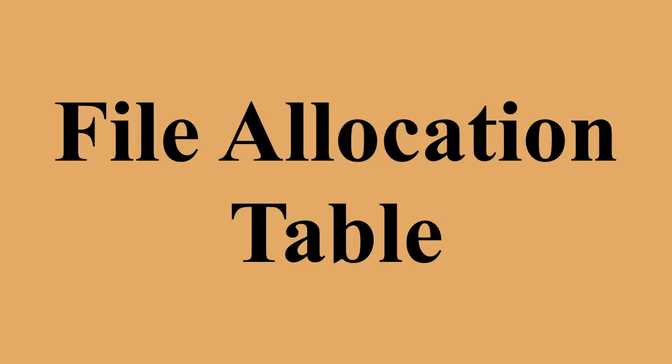FAT file systems are the default file system for removable media and are commonly found on floppy disks, super floppies, memory and flash memory cards, USB flash drives, and are supported by most portable devices such as PDAs, digital cameras, camcorders, media players, or mobile phones. While FAT12 is omnipresent on floppy disks, FAT16 and FAT32 are typically found on larger media. FAT was also commonly used on hard disks throughout the DOS and Windows 9X eras.